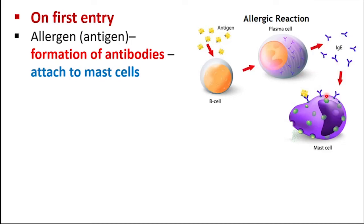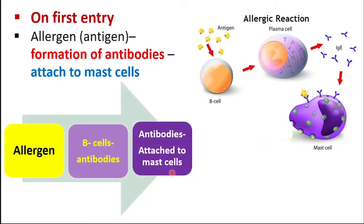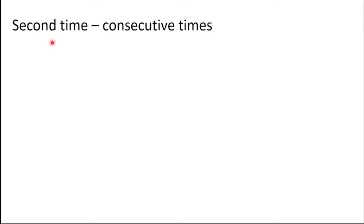What are mast cells? These are the cells of connective tissue. The antibodies produced by B cells reach the connective tissue and bind with the mast cells. In response to the entry of allergens, B cells produce antibodies, which then attach to the mast cells of connective tissue. This process is called sensitization and the person is said to be sensitized.